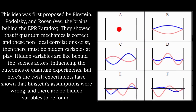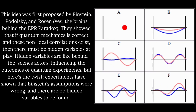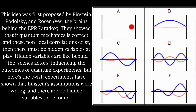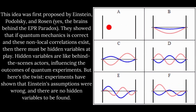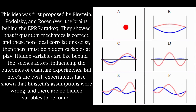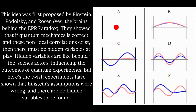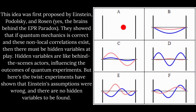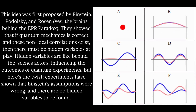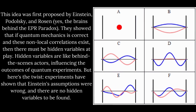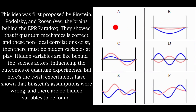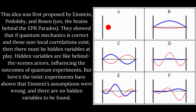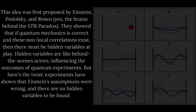This idea was first proposed by Einstein, Podolsky, and Rosen — the brains behind the EPR paradox. They showed that if quantum mechanics is correct and these non-local correlations exist, then there must be hidden variables at play. Hidden variables are like behind-the-scenes actors, influencing the outcomes of quantum experiments. But here's the twist: experiments have shown that Einstein's assumptions were wrong, and there are no hidden variables to be found.